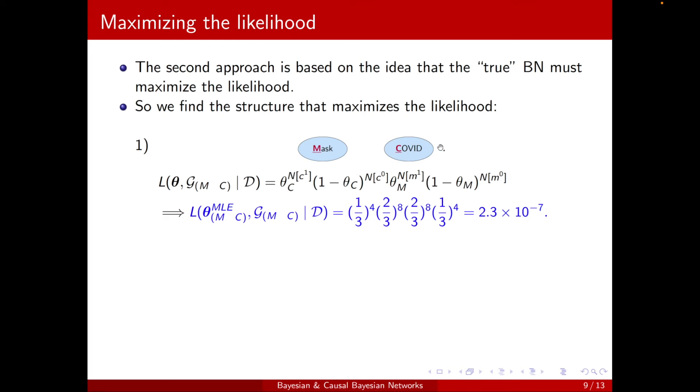And we just count how many times they appear. Now, if we want to maximize this likelihood over the parameter theta, then we will just replace the MLE estimates. Okay? And this is what we get. So we just count in the data, for example, theta C, how many times COVID appeared. This is C1. So divided by the total number that was in the table. And so on with all the other parameters. So this is the number that we will get.